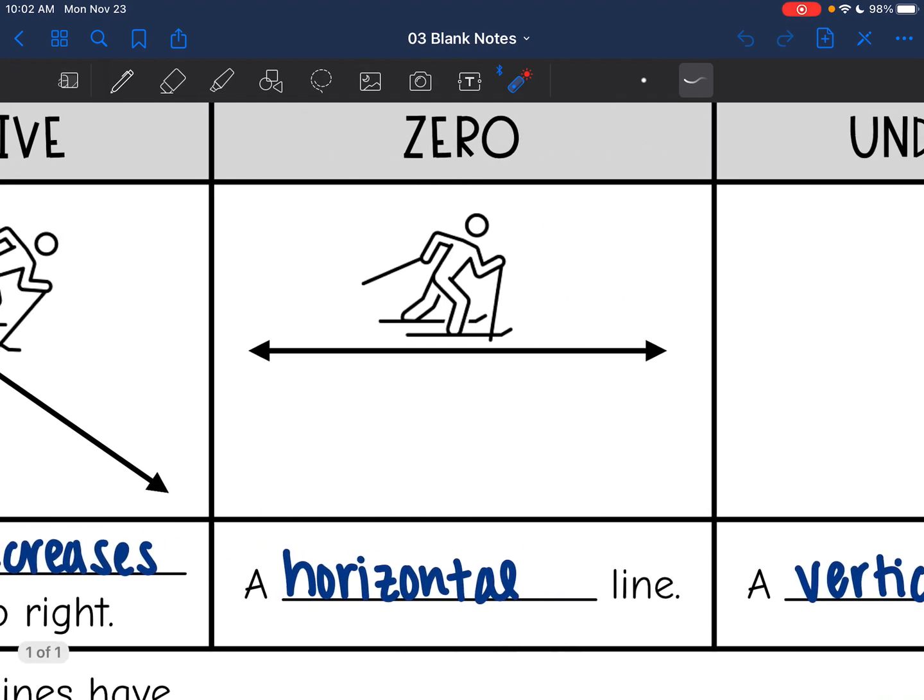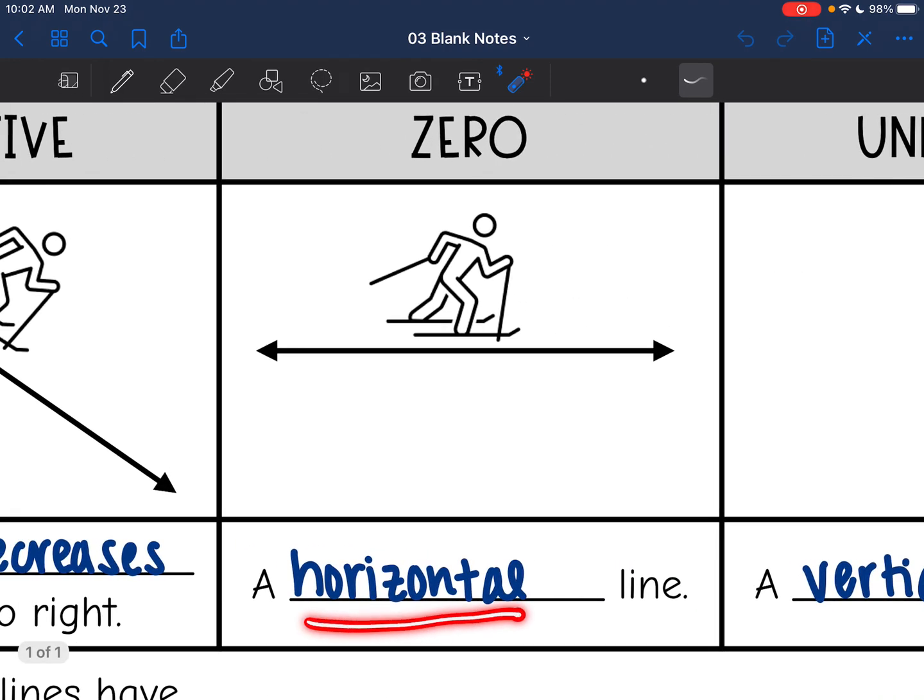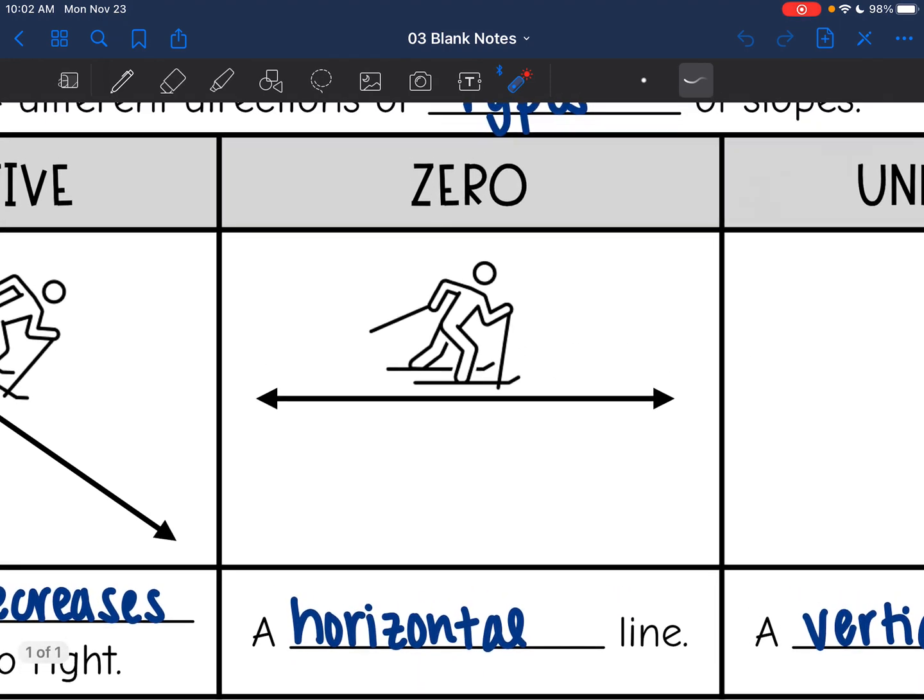And then whenever we have a completely horizontal line like this with zero incline, that means it has a zero slope. So that's a way that you can remember that it has zero incline.